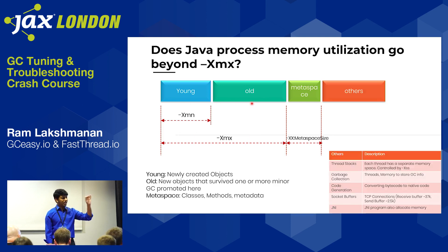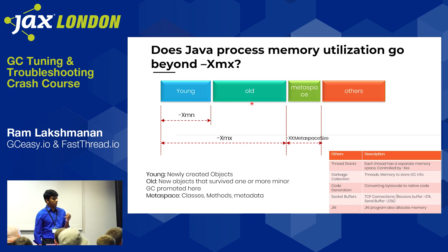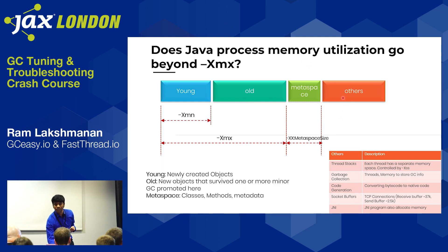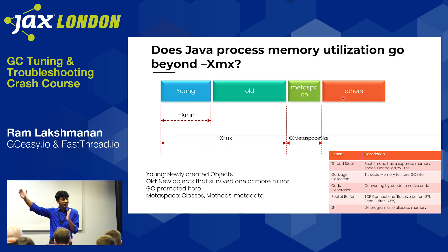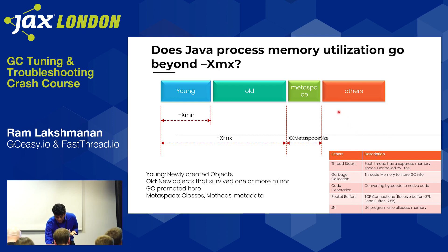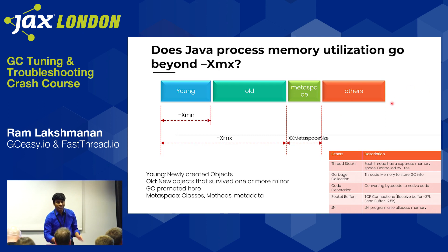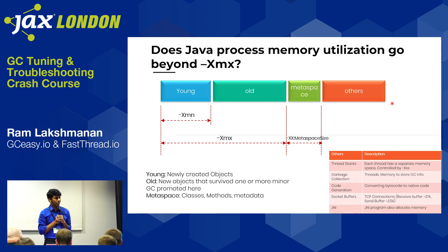Beyond young gen, old gen, and metaspace, there is an 'others' region with no direct limit. Application threads are created in this region. Connections to backend systems and memory needed by the garbage collector itself also go here. Because of this, there is no single variable to cap the total Java process memory — it can keep growing.